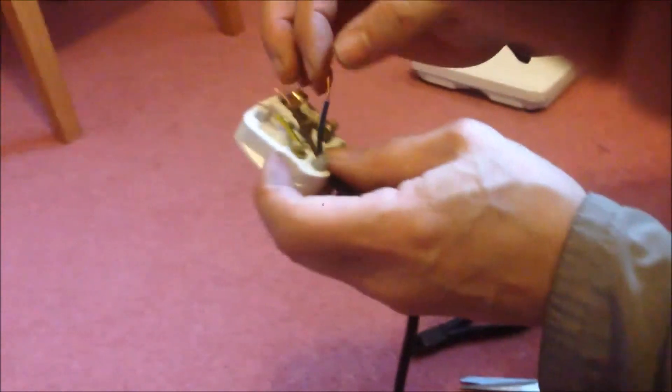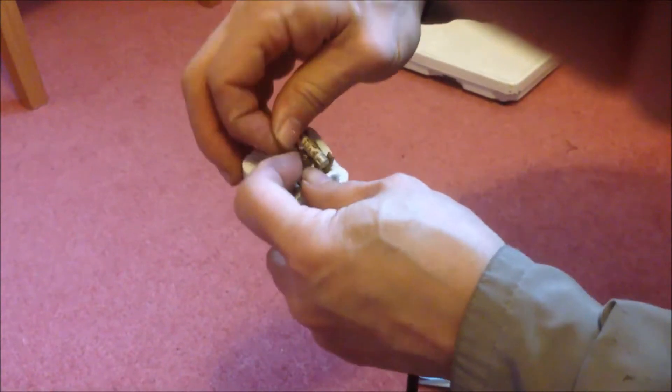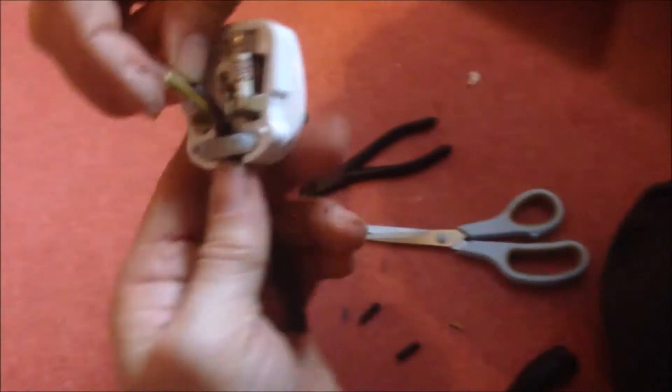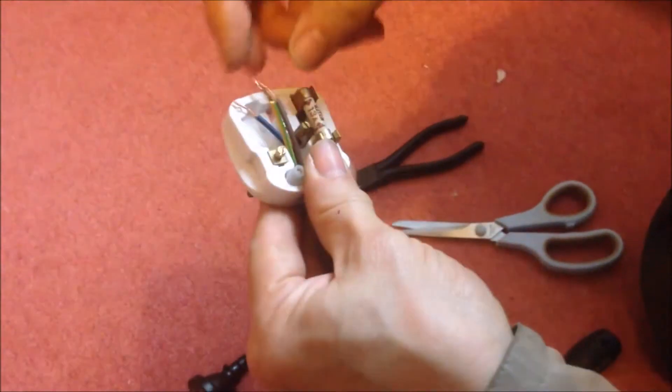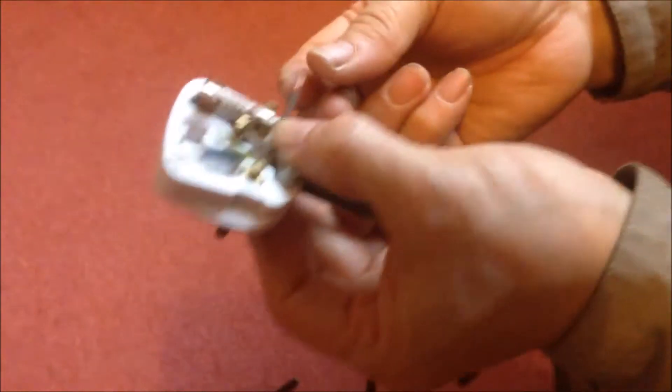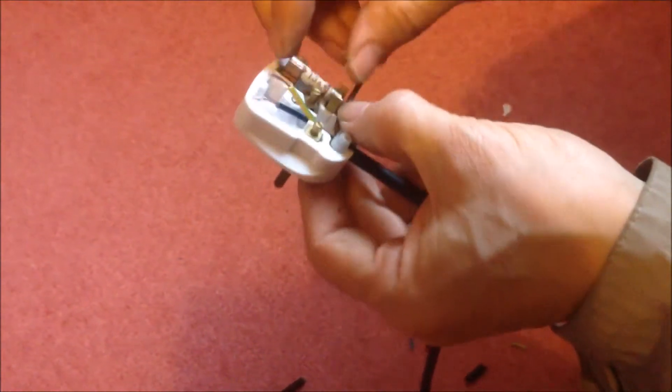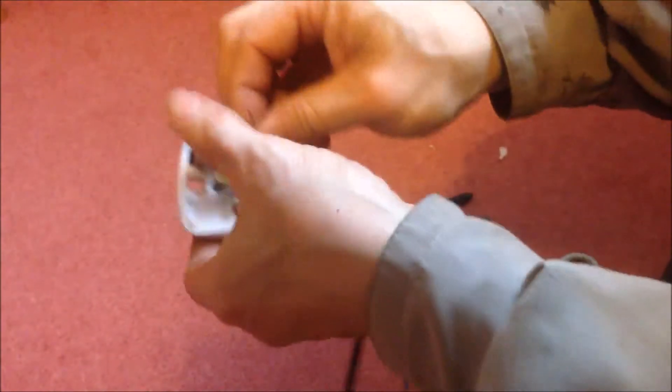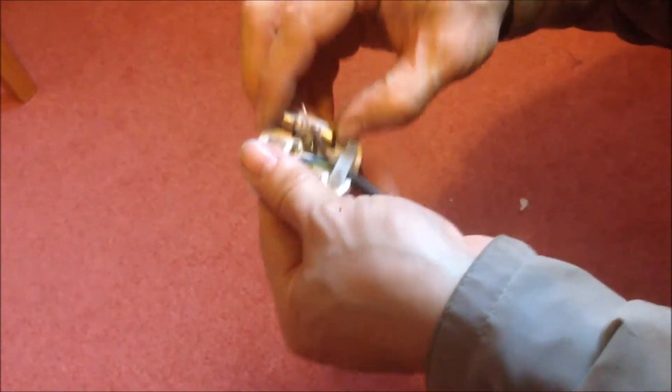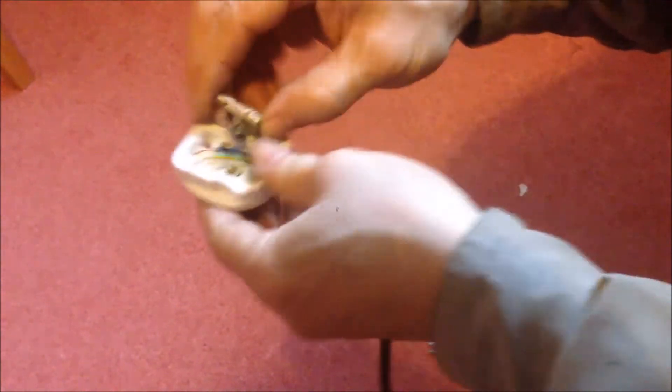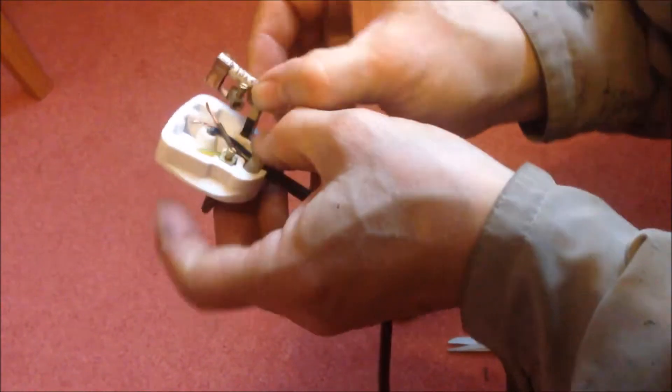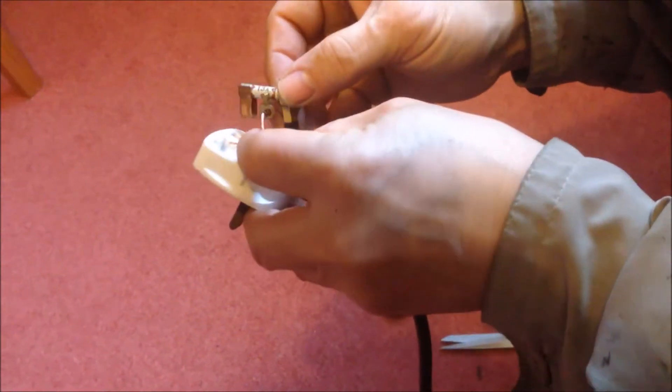And now we're going to get the three wires. So this is the live, should go there. Here is the blue one, should go there. We're going to get the first one, get this wire into here. Now we can take it out and just push the other side. We just lift a bit. So this is the live.